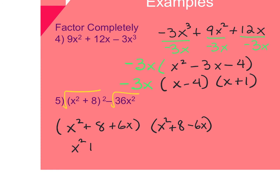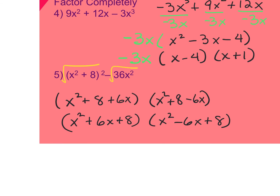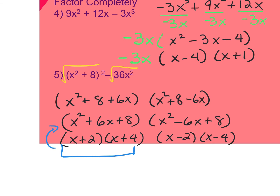Rearranging into standard form: x squared plus 6x plus 8 and x squared minus 6x plus 8. The first trinomial — factors of 8 that combine to give positive 6 are 2 and 4, so it factors into x plus 2 and x plus 4. The second trinomial is the same but both signs are negative. This will FOIL back to give the originals. You can also multiply and distribute to verify it goes back to the original.